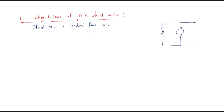This is the DC shunt motor with terminals A and A. This is the DC shunt motor winding, which has resistance Rsh. It takes current Ish, while the armature takes armature current and the input supply voltage, giving the output.